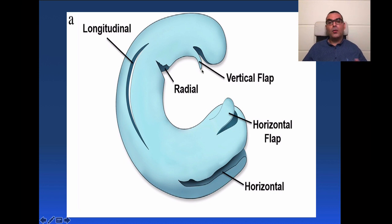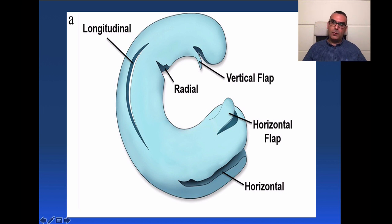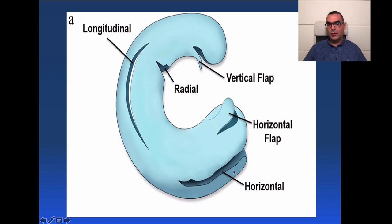The vertical flap tear is a combination: it is a radial vertical tear that continues for a small distance as a vertical longitudinal tear. So it initially goes perpendicular to the long axis, then continues parallel — a radial tear with a small longitudinal continuation. The vertical flap tear thus has both radial and longitudinal components, while the horizontal flap tear is similar to a cleavage tear but closer to the surface, resulting in an amputated meniscus and a displaced meniscal flap.